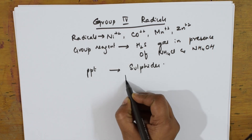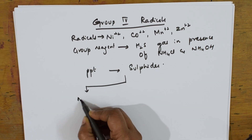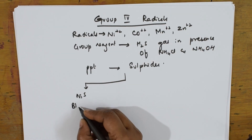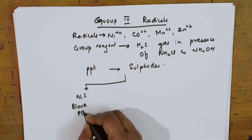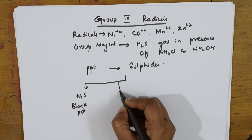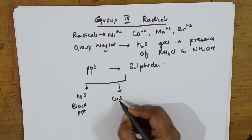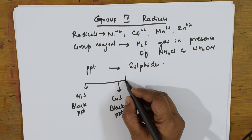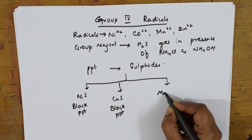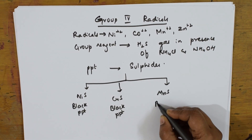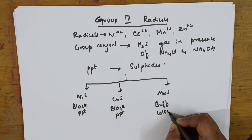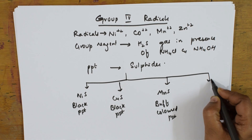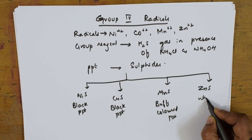If we take nickel, it will precipitate as nickel sulphide, which is a black precipitate. Cobalt sulphide also forms a black precipitate. Manganese sulphide gives a buff-colored precipitate. If zinc is present, zinc sulphide gives a white precipitate.